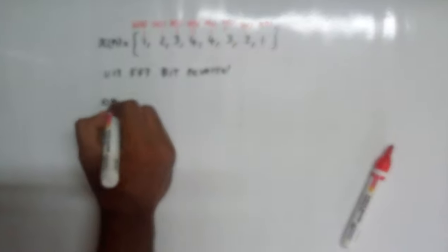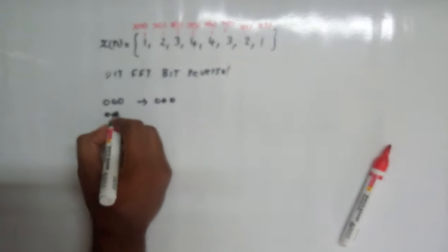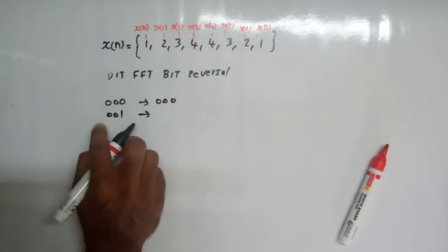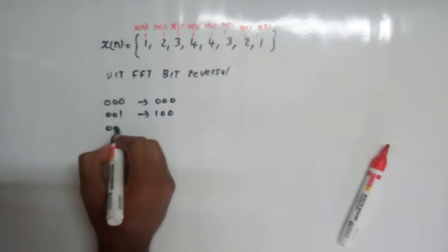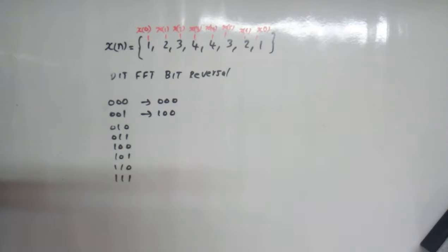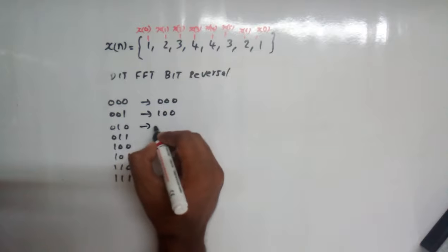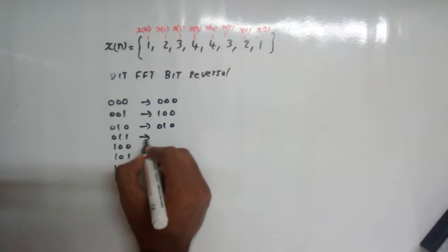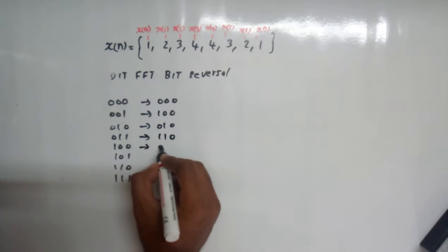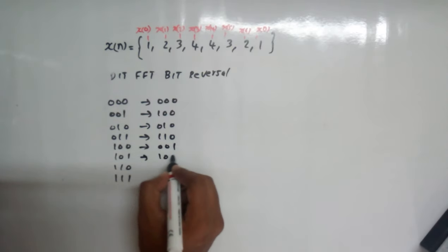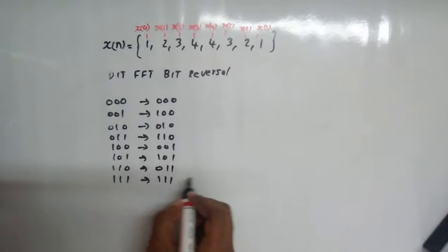Bit reversal means 000 is written as 000 itself. 001 is reversed to 100. 010 reversed is 010 itself. 011 reversed is 110. Then 100, 101, 110, and 111 are reversed accordingly.